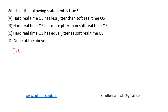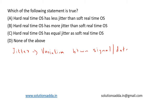So first of all, what is jitter? It is effectively the variation between the signals or data that is being sent — variation between signal or data being sent. So for a hard RTOS, that is hard real-time OS...